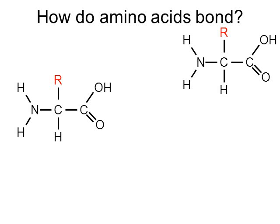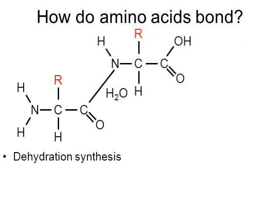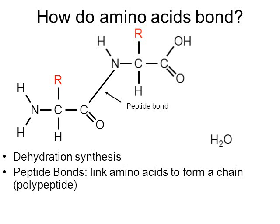How do amino acids bond? A polypeptide can be made from hundreds or thousands of amino acids. Amino acids bond through a chemical reaction called a dehydration synthesis reaction. With the removal of water — which is why it's called a dehydration reaction — two amino acids bond together. What holds them together is a bond called a peptide bond, connecting the carbon on the left to the nitrogen on the right.